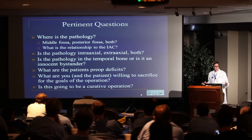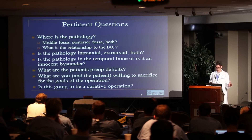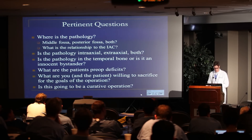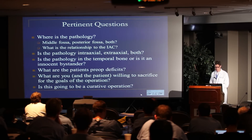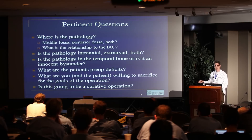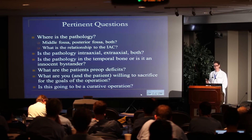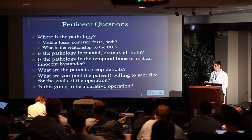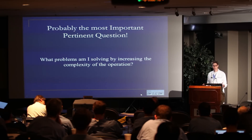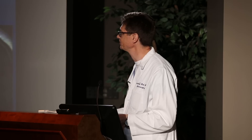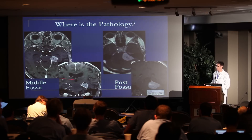You also need a fat graft, which you don't need with a retro-sigmoid operation. When I think about whether to use this approach, I ask: Where is the pathology — middle fossa, posterior fossa, or both? What's the relationship to the IAC — is it in front or behind? Is the pathology intra-axial or extra-axial? Is the temporal bone specifically involved or just a bystander? What deficits does the patient already have and what are they willing to accept? And is the approach going to be the difference between a curative and non-curative operation?